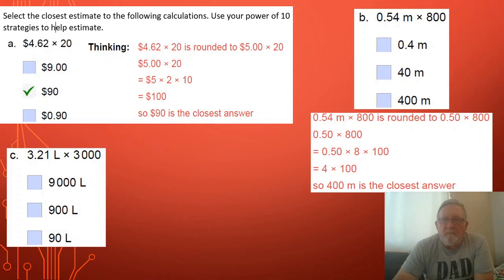Welcome back. Let's check your working. If I'm looking at B, I'm going to round 54 meters down to 0.5. You should be able to do that quite easily because 0.5 is a half. A half times 800, if I broke 800 up into 8 times 100, a half of 8 is 4, 4 times 100 is 400. So 400 is my closest answer.